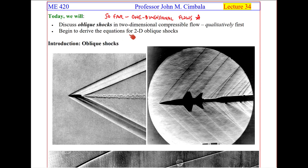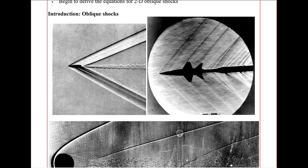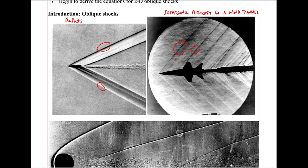We'll begin to derive some of the equations for 2D oblique shocks. By way of introduction, here are various flows where you find oblique shocks. Bullets traveling through air, these are oblique shocks. Supersonic aircraft in a wind tunnel, here you see all these oblique shocks.